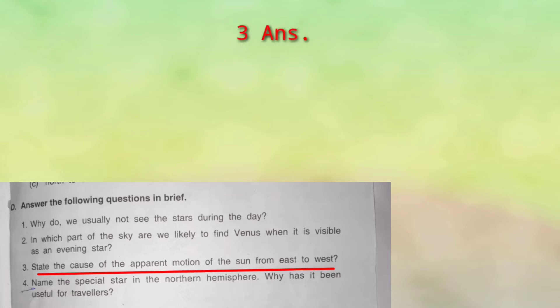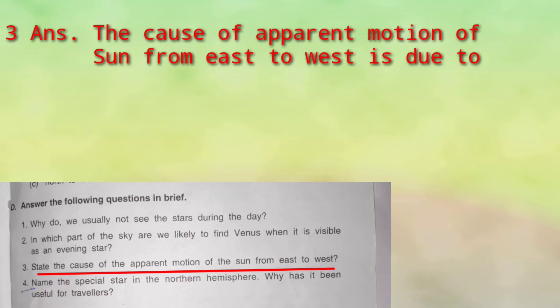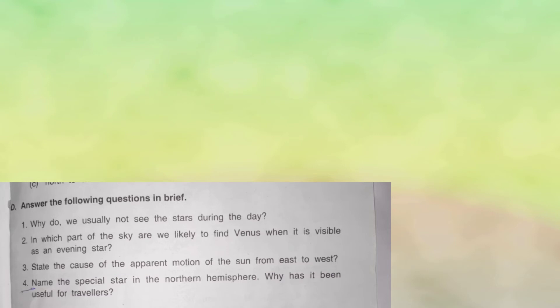The reason behind the apparent east-to-west motion of the sun is because of the rotation of the earth. Kyunki earth rotate kar rahi hai west se east direction mein, isliye hume sun aur stars ulte direction mein — east se west ki taraf jaate hue — dikhai dete hain.